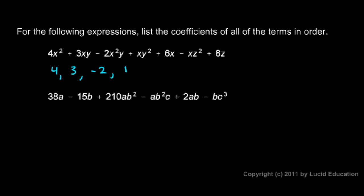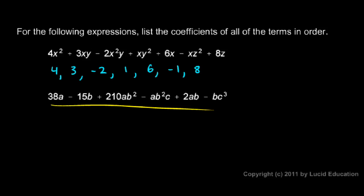The coefficient of the next term is obviously 6. Then for negative x·z², the negative sign is part of the term and there's no number, so we understand it to be negative 1. The coefficient there is negative 1. And then on the last term, the coefficient is clearly 8.